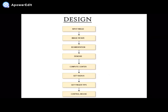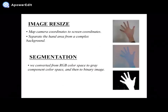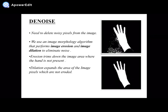Design. It has input image, image resize, segmentation, denoise, compute center, get radius, get fingertips, and control mouse. In image resize, we map camera coordinates to screen coordinates and separate the hand area from a complex background. In segmentation, we convert RGB color space to gray component color space and then to binary image. In denoising, we delete noisy pixels from the image using an image morphology algorithm that performs image erosion and image dilation to eliminate noise. Erosion trims down the image area where the hand is not present. Dilation expands the area of image pixels which are not eroded, clarifying the image.